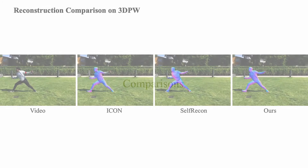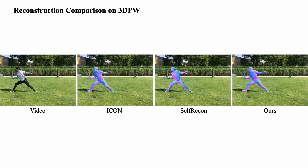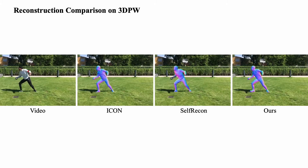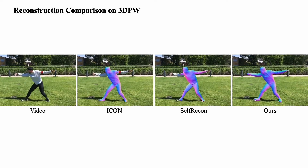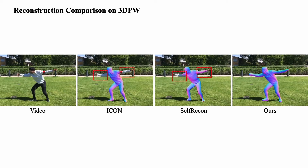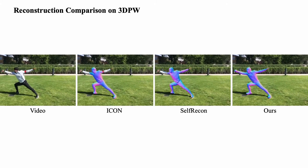We compare our method to existing state-of-the-art approaches, ICON and SELF-RECON, for the task of 3D human reconstruction. We first show the comparison on the 3DPW dataset. Both ICON and SELF-RECON produce less detailed and sometimes physically implausible reconstructions. Here we can see the incomplete human bodies. In contrast, our method reconstructs complete human bodies and achieves a detailed and temporally consistent shape reconstruction.